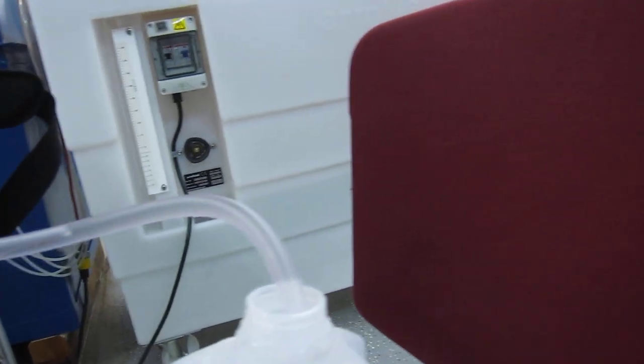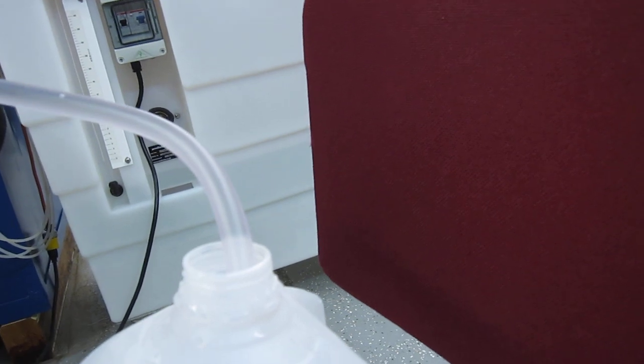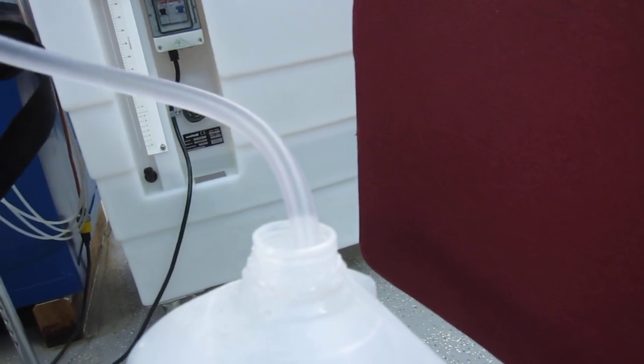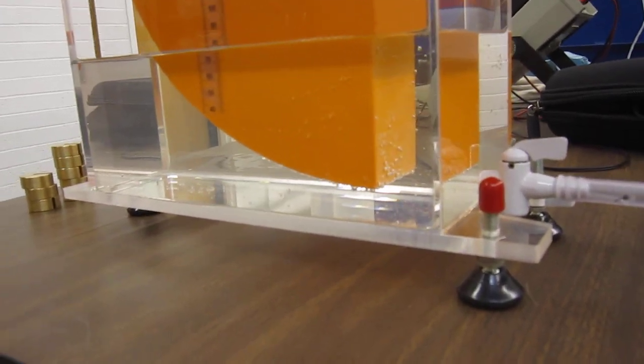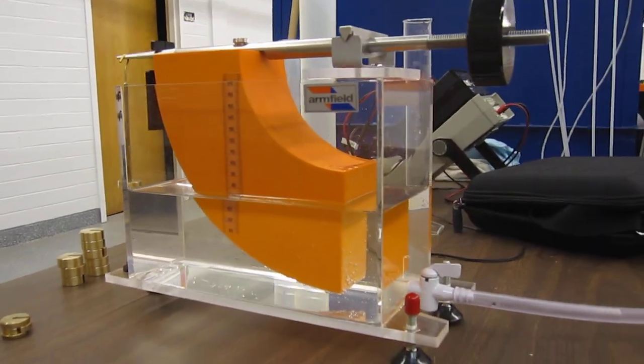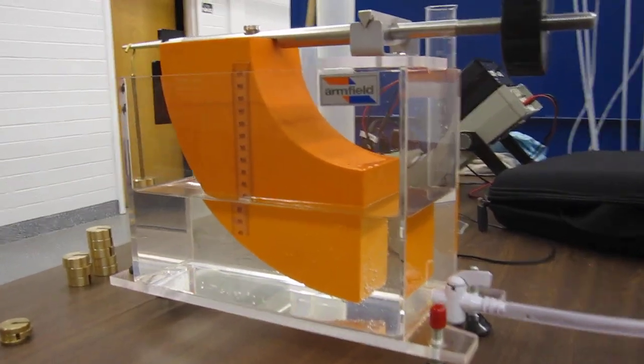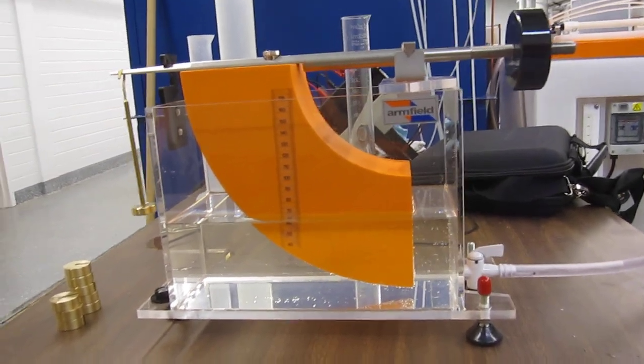You can see the water flowing up a little bit there. And you can see the water is draining. And the process is going to take a while. So that is the experiment that we're going to run for the hydrostatic pressure apparatus in the Civil and Environmental Engineering Hydraulics Lab.